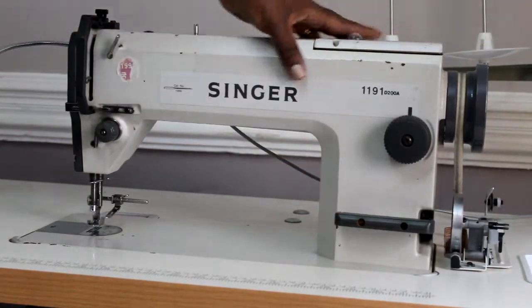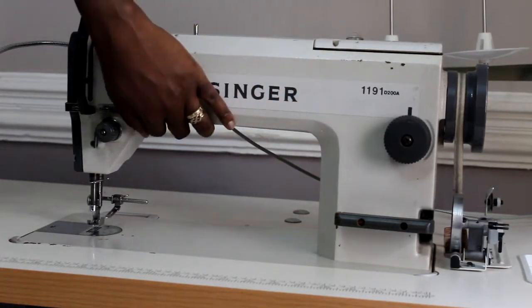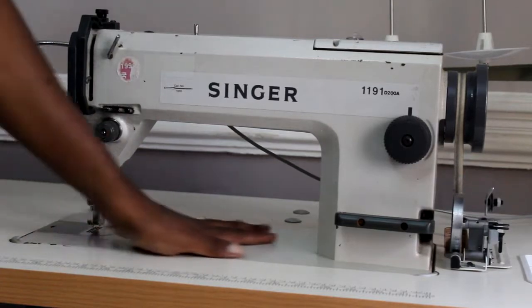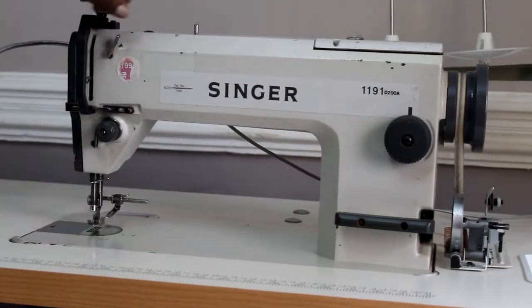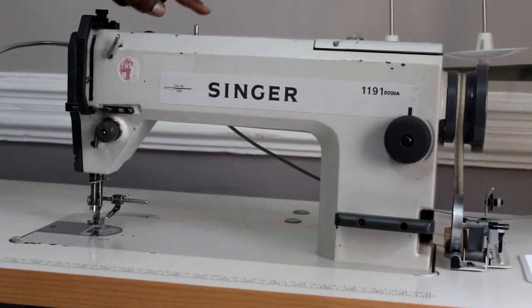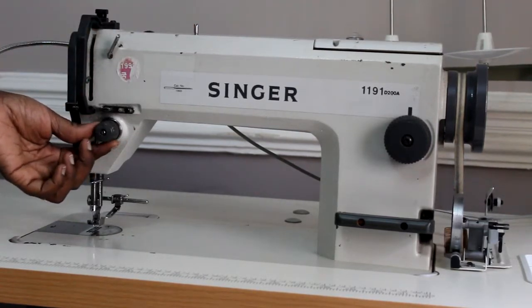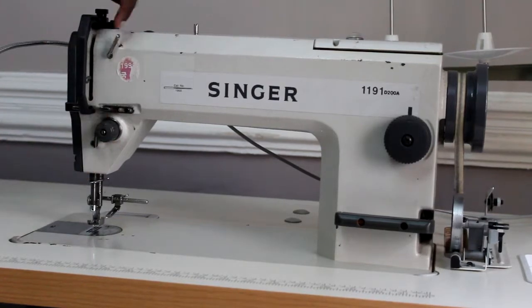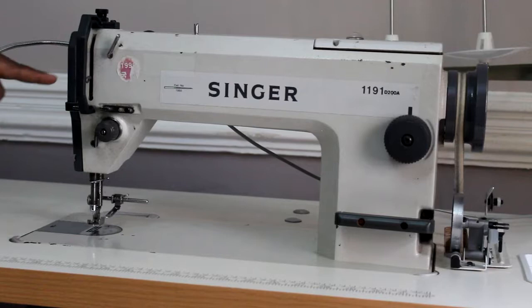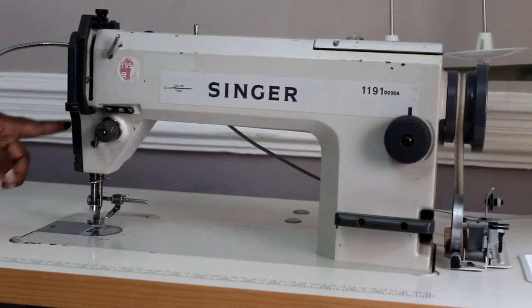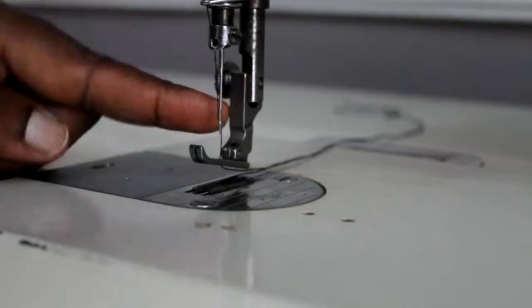You have the arm of the machine, the bed of the machine. You have your thread guides, an upper one here—mine is broken. You have your tension knob down here. You have a thread guide up here and some other thread guides on the side here and all the way down to the needle.